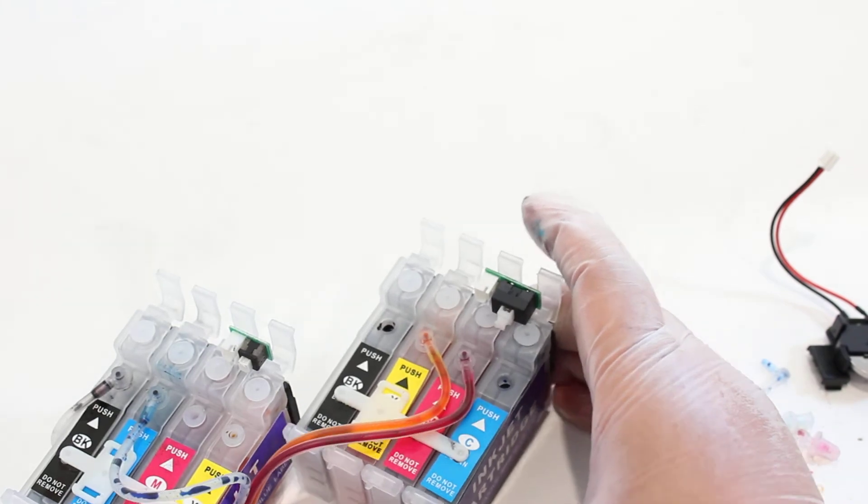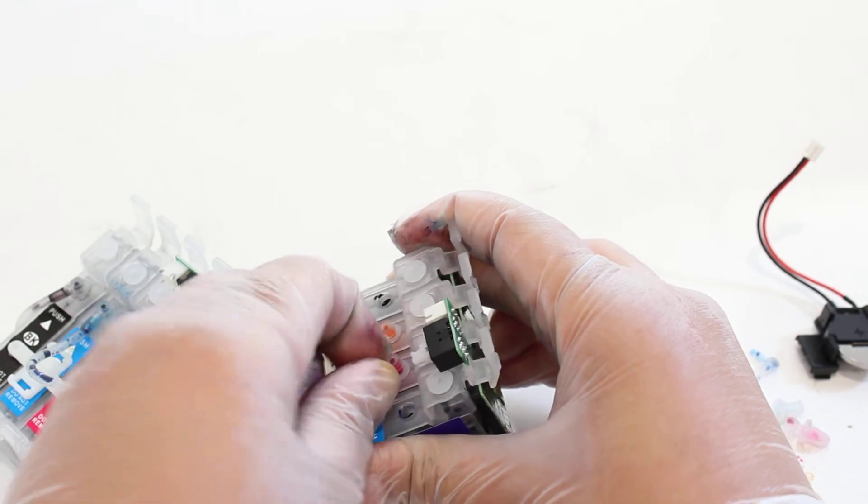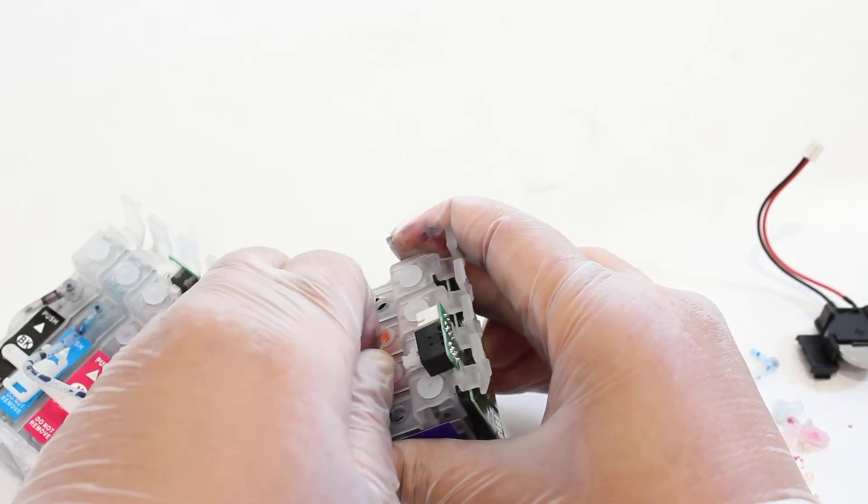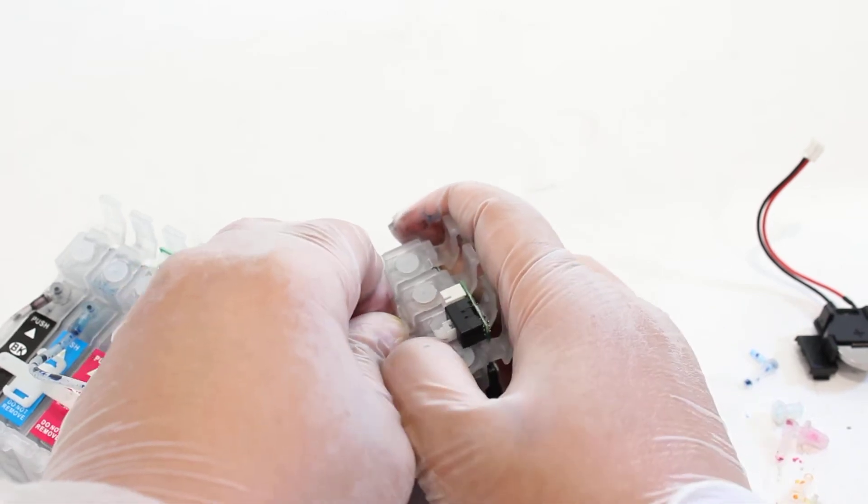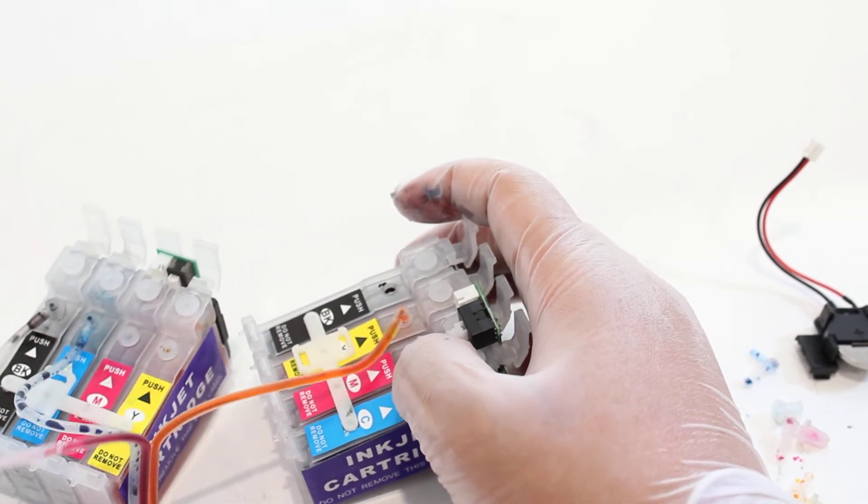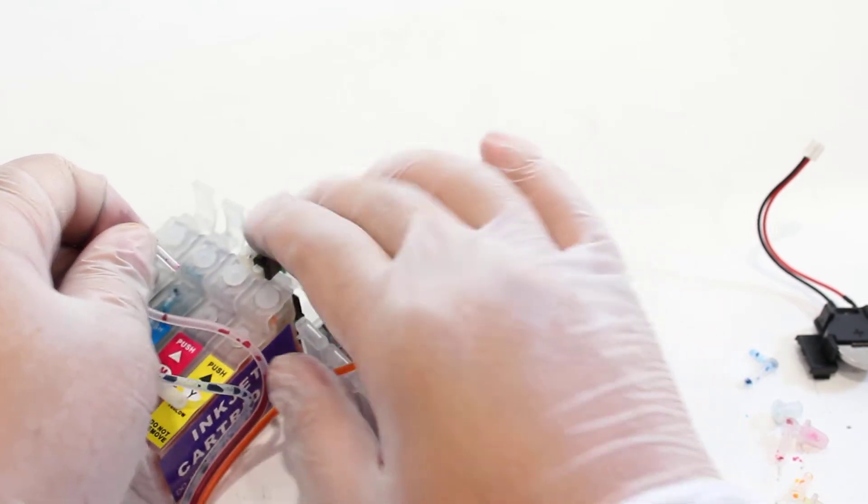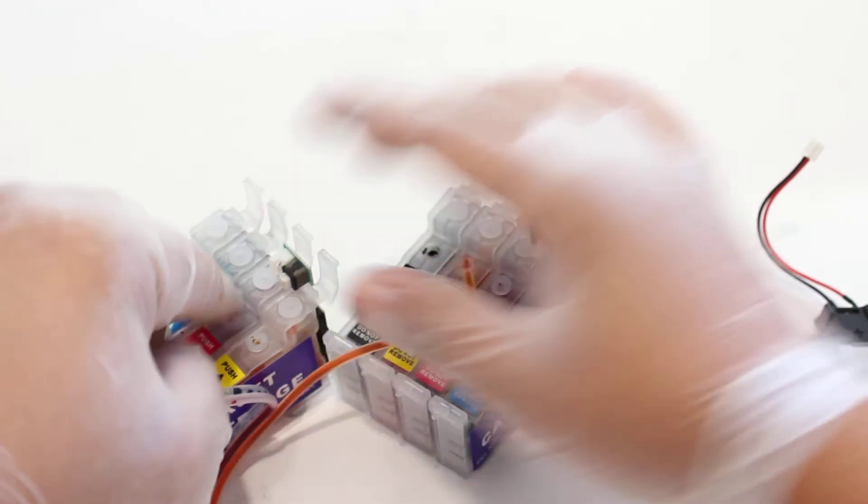So I'm going to do magenta next. So I need to find some space here. So you watch me pull this out and I'm going to angle it upwards at a 45 degree angle. Pull it out. Hold it upwards. Push this into the new cartridge. Push it in.